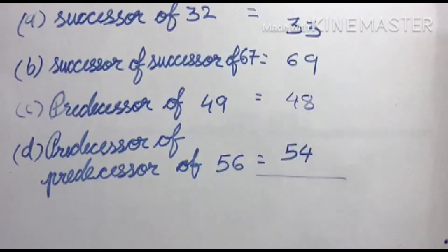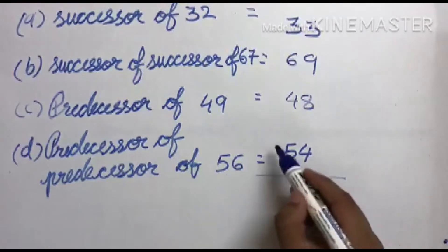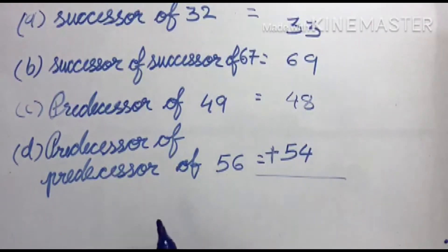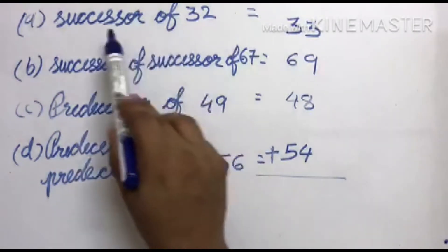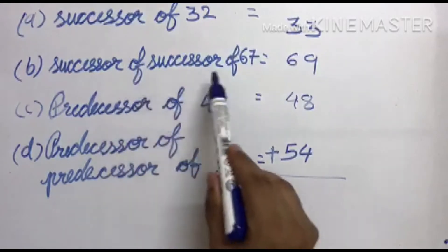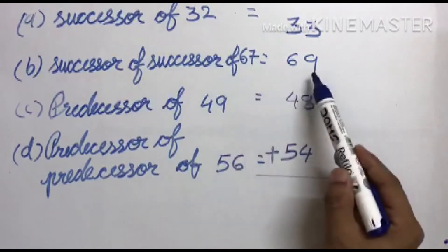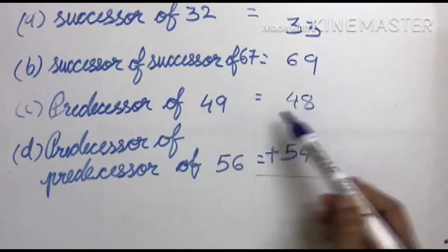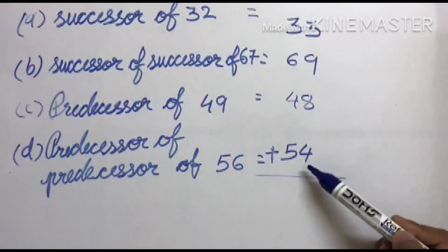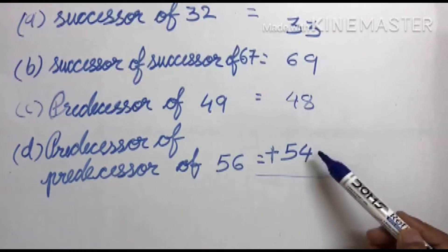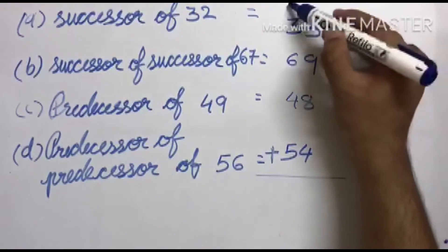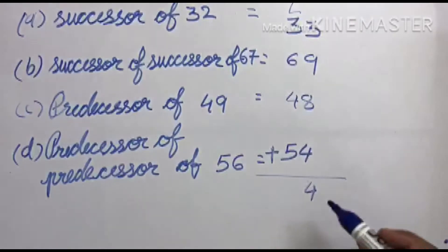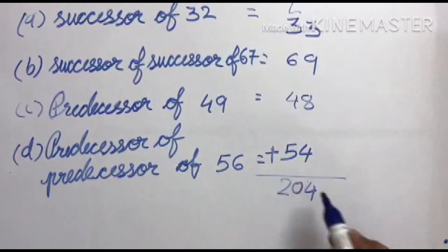तो हमें क्या करने को बोला है? Determine the sum — यानि हम plus करेंगे। Successor of 32 is 33, successor of successor of 67 is 69, predecessor of 49 is 48, predecessor of predecessor of 56 is 54. इन चारों का sum: 33+69+48+54 = 204. Understood?